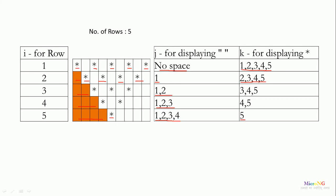Look at the fifth row — we require only 1 star to be printed. So the value of j and k is related to the value of i. For example, consider the value of i as 3. The value of j ranges from 1 to 2, which means it always starts from 1 and goes up to i minus 1. When i is 3, j goes up to 2. When i is 4, j goes up to 3. When i is 5, j goes up to 4. So it is always i minus 1, and we found a relation: j should always start from 1 and go up to i minus 1.